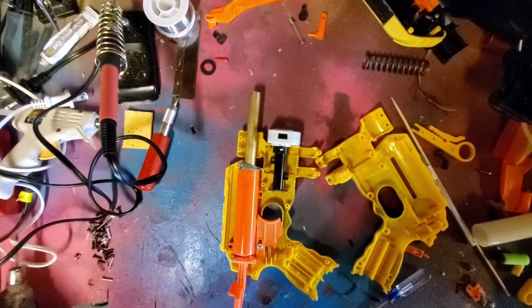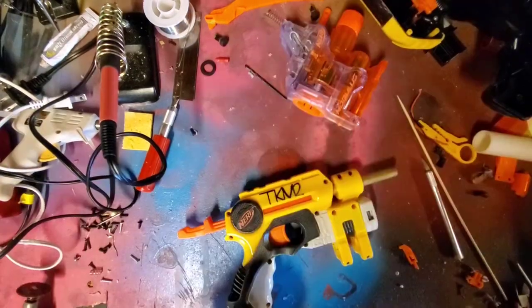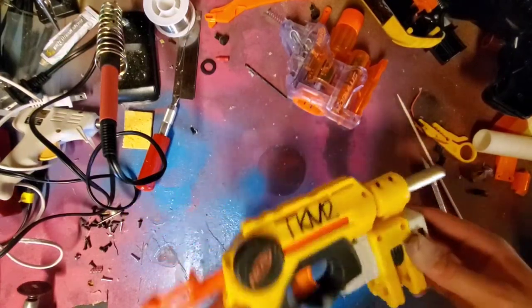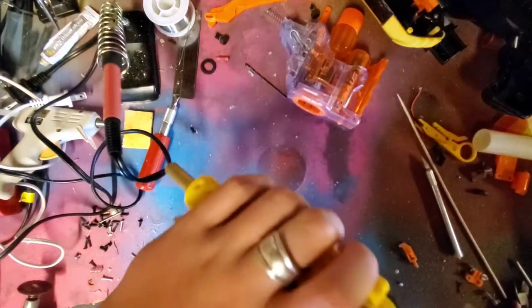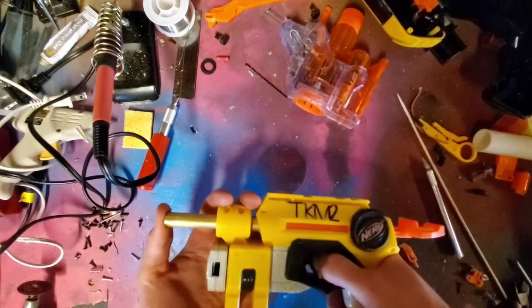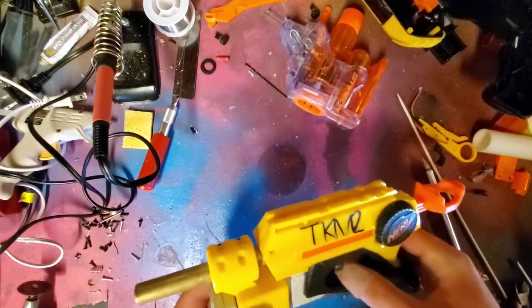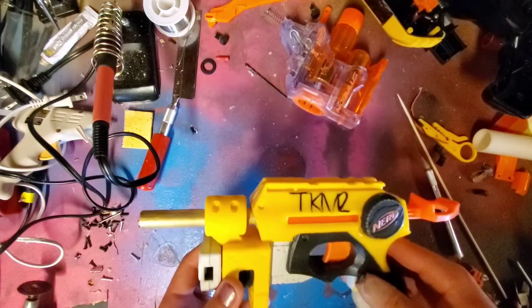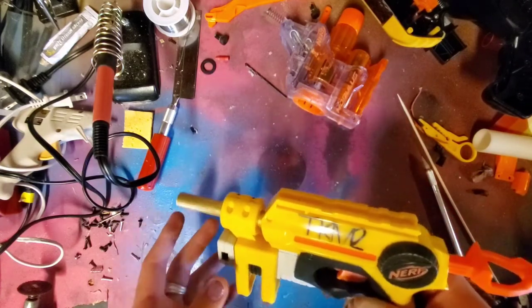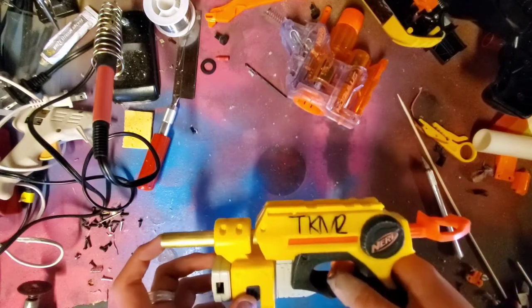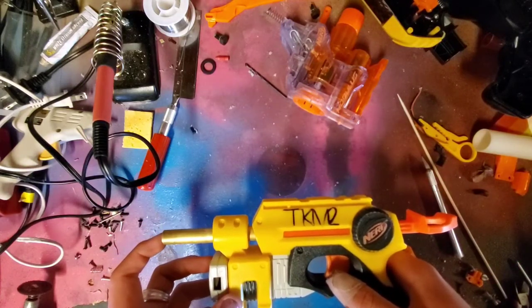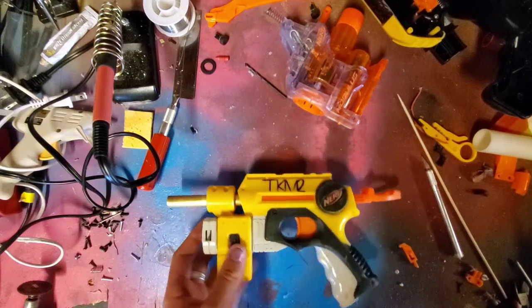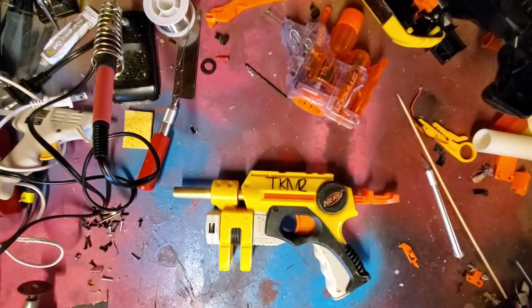It is done. I have the Nightfinder reassembled with a mean prime now. You may notice the name TKM2. This is the second of my TKM Nightfinders. Tiny Killing Machine is the name - it's named after my cat because she's tiny and she kills everything, she's mean. Let me scrounge on my floor for some darts.